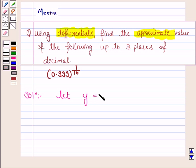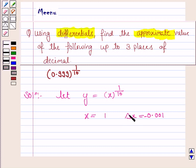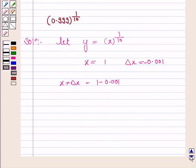Let us first define y as a function of x, and let us define it as x to the power 1 upon 10. We choose x so that we can easily find out its 10th root. So we choose x as 1 and delta x as minus 0.001, since we want x plus delta x to equal 0.999. So x plus delta x equals 1 minus 0.001, which is 0.999.